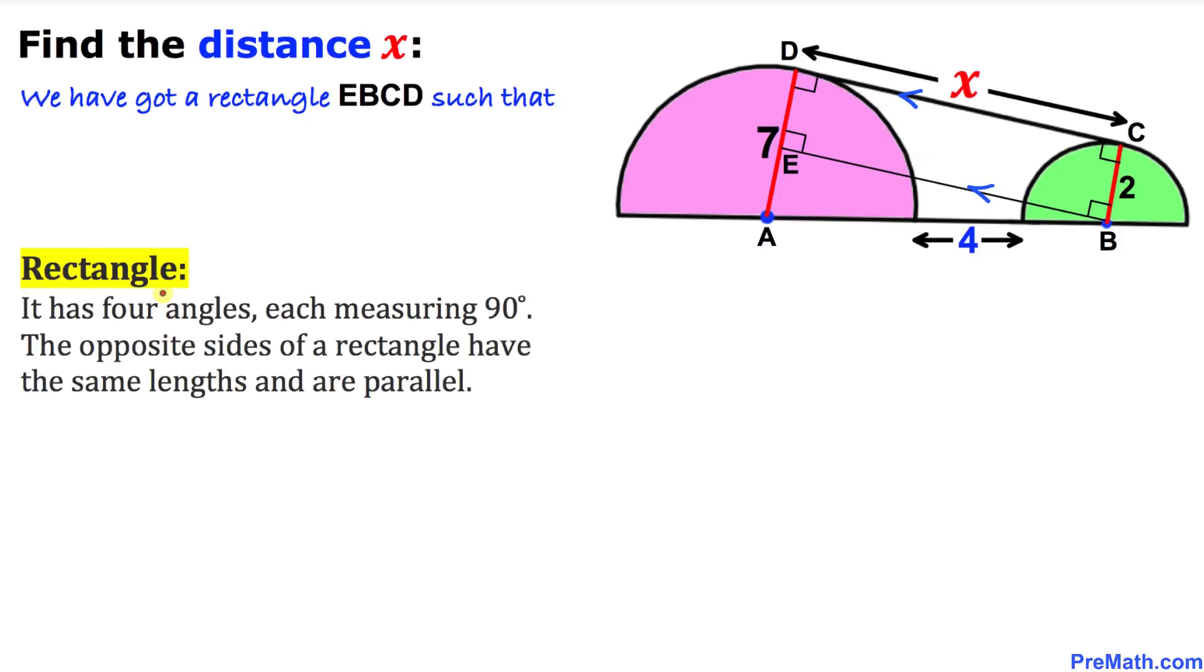And now let's recall the definition of a rectangle. A rectangle has 4 angles each measuring 90 degrees. The opposite sides of a rectangle have the same length and are parallel. As you can see in this figure, all of these angles are 90 degrees.